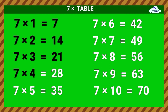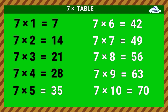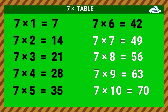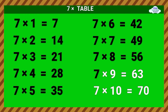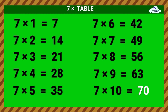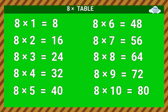7 times 4 equals 28. 7 times 5 equals 35. 7 times 6 equals 42. 7 times 7 equals 49. 7 times 8 equals 56. 7 times 9 equals 63. 7 times 10 equals 70. Eight Times Table.